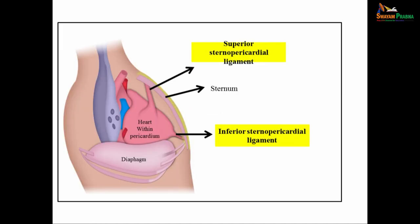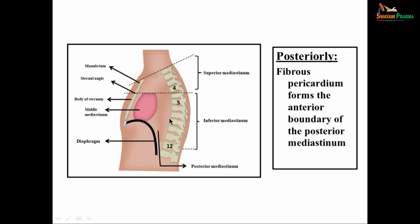In front, the fibrous pericardium is attached to the sternum. It is connected to the sternum by two pericardial ligaments: the superior sternopericardial ligament and the inferior sternopericardial ligament. On the posterior aspect, the fibrous pericardium forms the anterior boundary of the posterior mediastinum. The heart and the fibrous pericardium are located in the middle mediastinum.